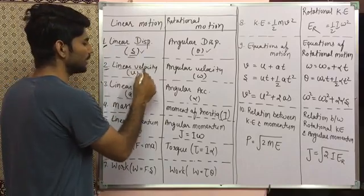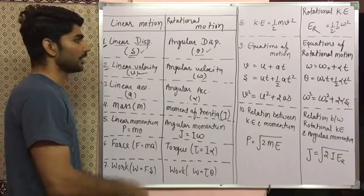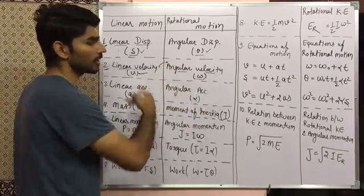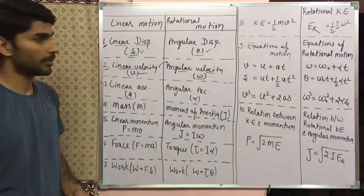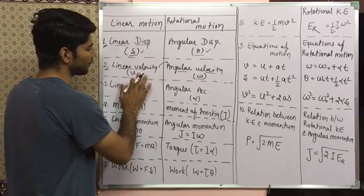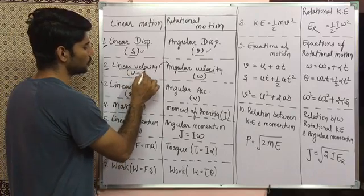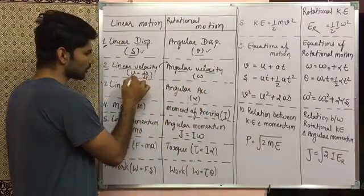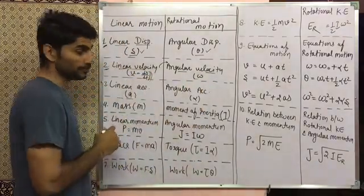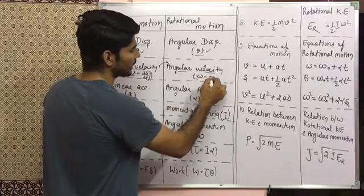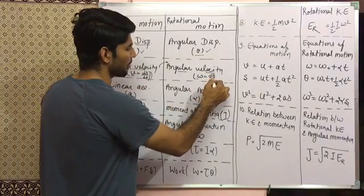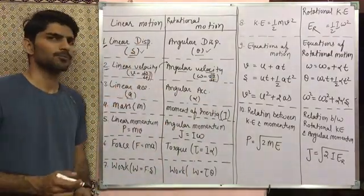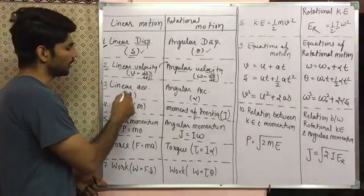The second term: in linear motion we have velocity, called linear velocity, denoted by small 'v'. Similarly, in rotational motion we have angular velocity, denoted by omega. The formula for velocity is v = ds/dt — it is the rate of change of displacement with time. And omega = dθ/dt, which is the rate of change of angular displacement with time.